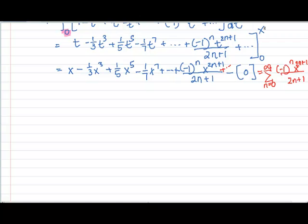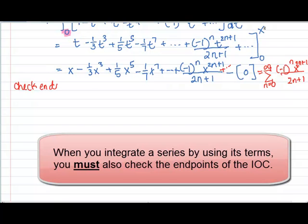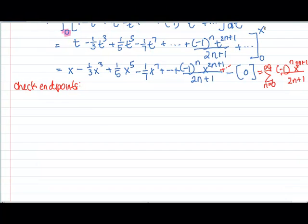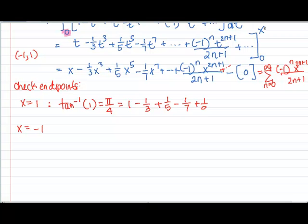We need to also figure out the interval of convergence. When you integrate a series, you almost have the same IOC, but we must also check the endpoints because sometimes weird things happen. Since the original IOC was negative 1 to 1, I need to also check x equals 1, x equals negative 1. I'm going to plug in negative 1 to my arctan. Does that exist? Can the tangent value equal to 1? Yes, it's pi over 4.